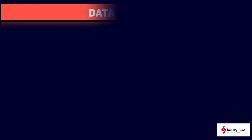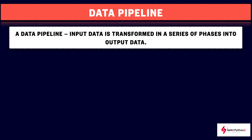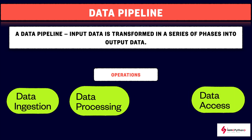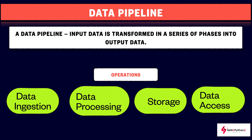Another critical topic is the data pipeline, which is commonly seen in data science projects. A data pipeline transforms input data through a series of phases into output data, using operations like data processing, data access, data ingestion, and data storage. The flow is: data ingestion from sources, data processing via ETL, storage in data lakes and data warehouses, and finally data access through business intelligence tools or other tools for building models and dashboards.